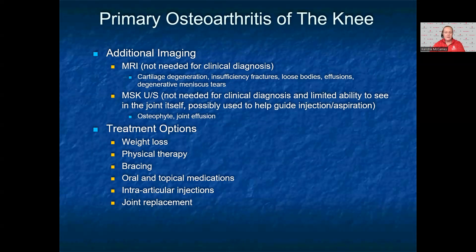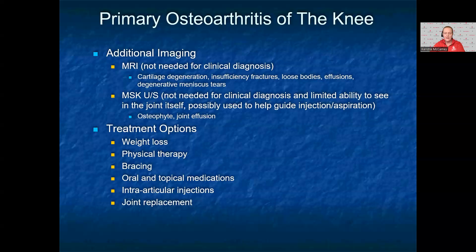With knee osteoarthritis, MRIs are not needed for the diagnosis, as the clinical history and x-rays give you the information you need. If you would get an MRI, you would see cartilage degeneration or defects, insufficiency fractures if the arthritis is advanced, loose bodies, effusions, and degenerative meniscal tears. Musculoskeletal ultrasound is also not needed for the diagnosis of osteoarthritis, as it has limited ability to see the joint itself; however, you may use it to guide an injection. Treatment options include weight loss, physical therapy, bracing, oral and topical medications, intra-articular injection therapy, and joint replacement.